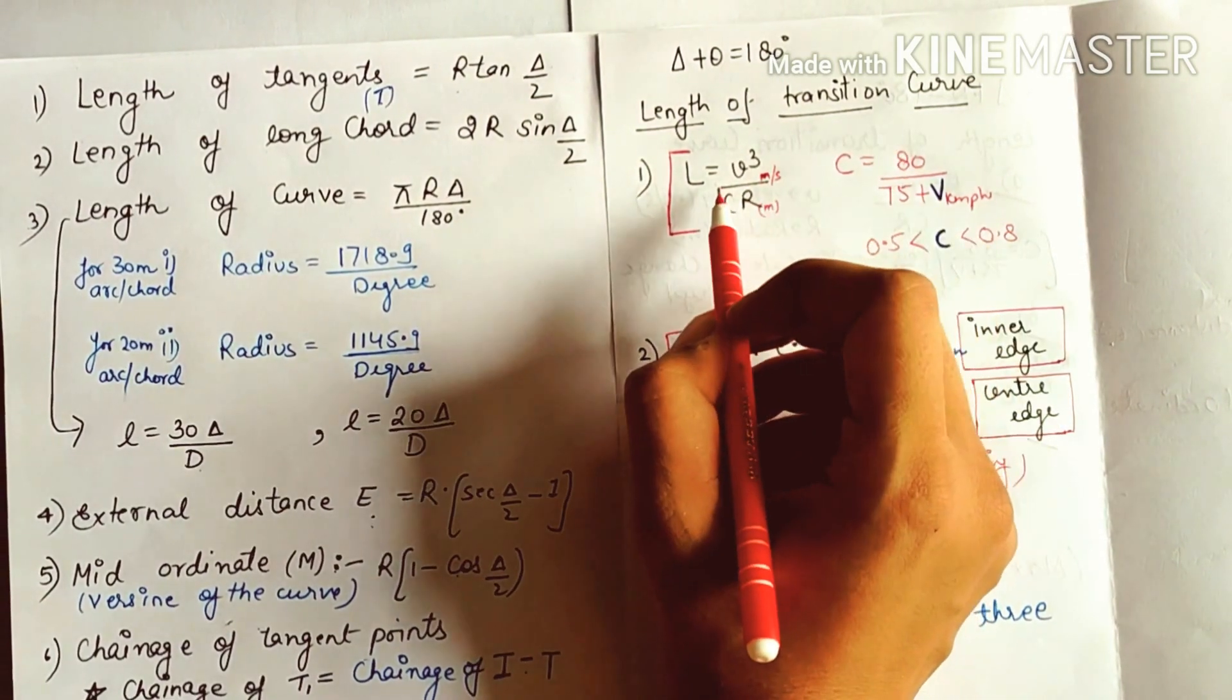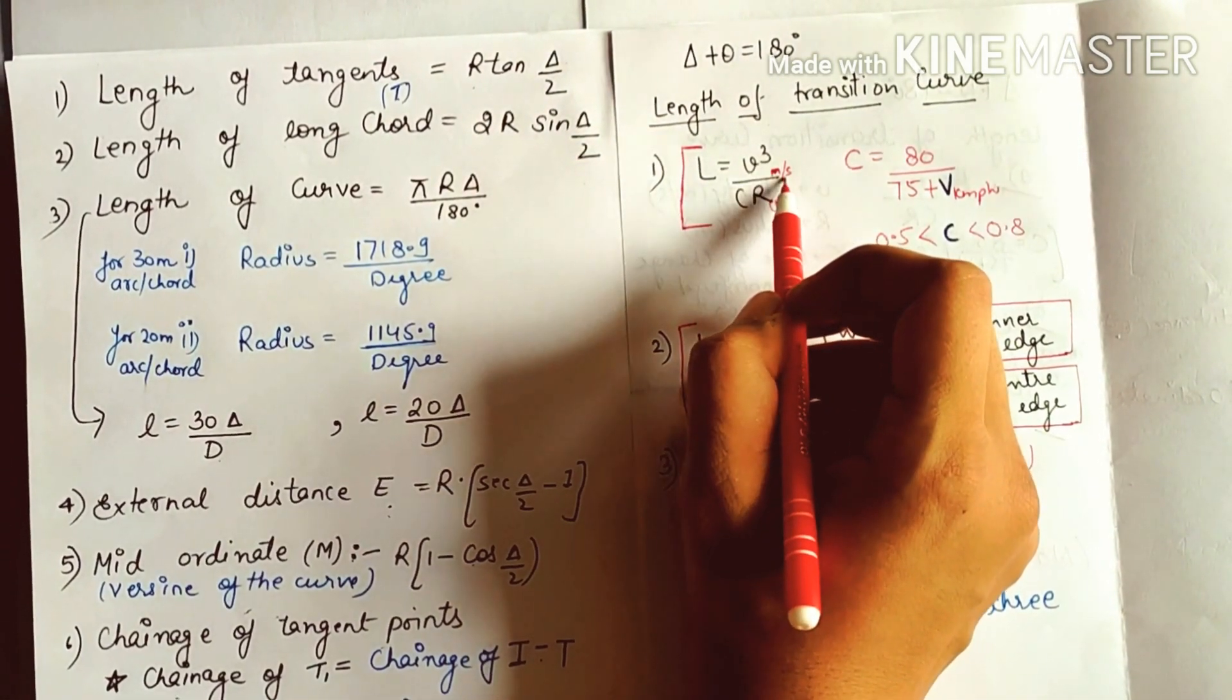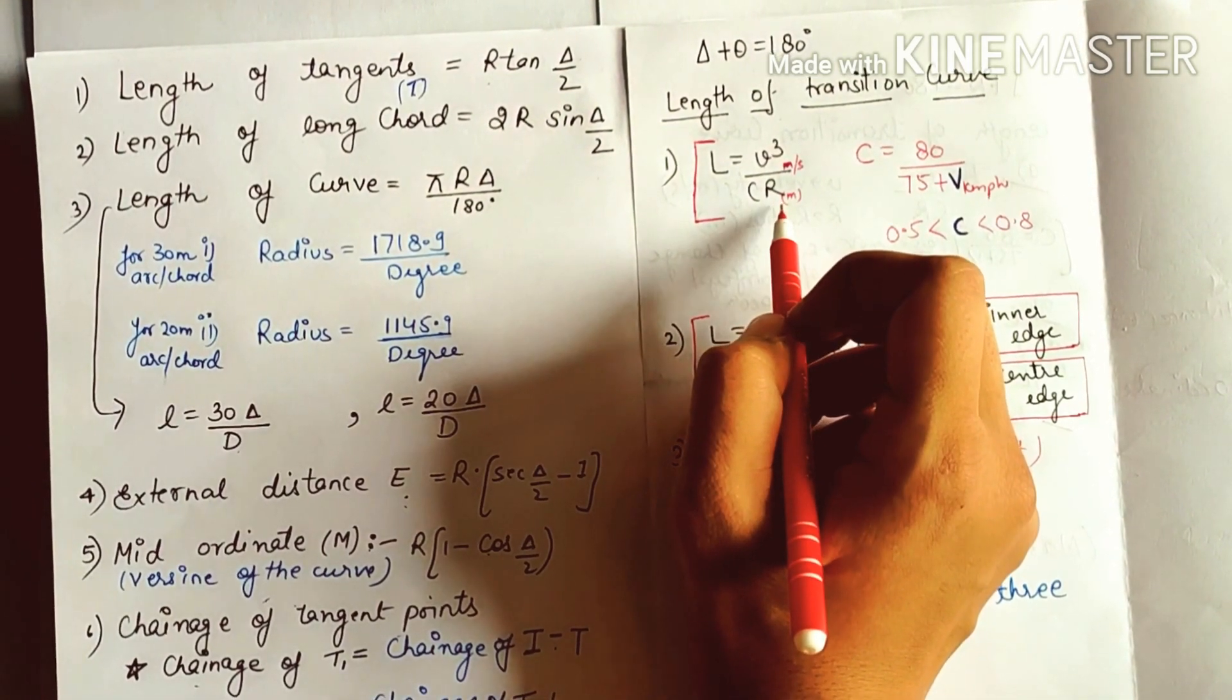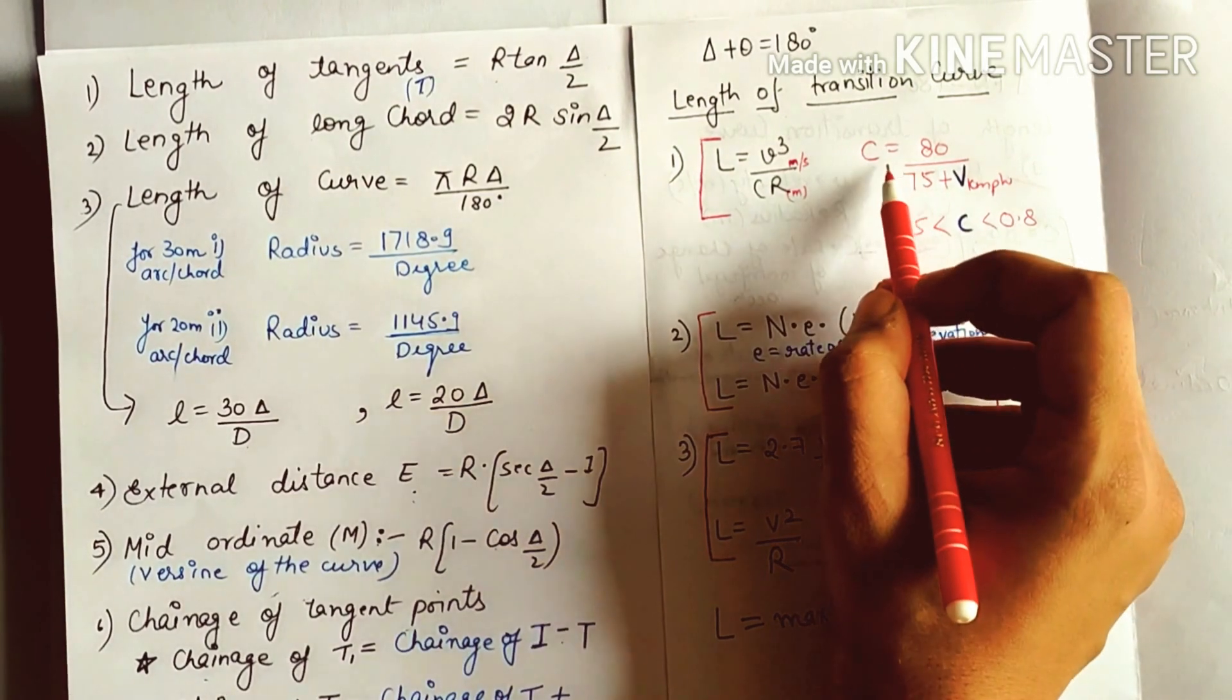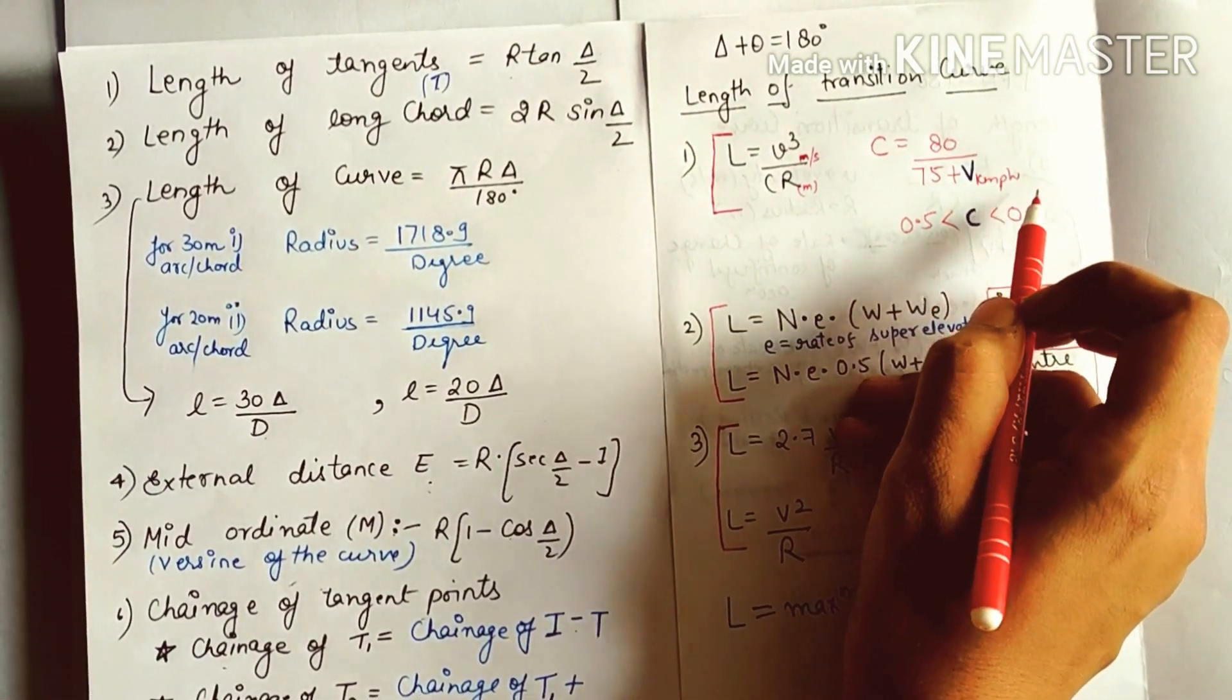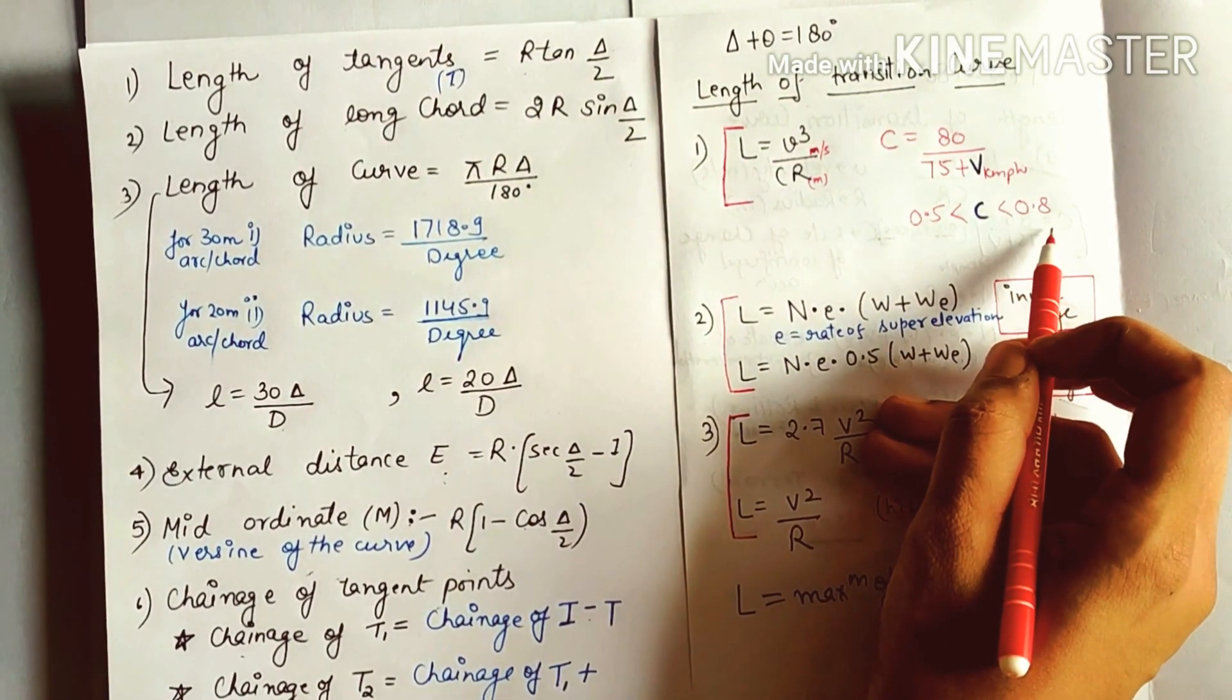Length of transition curve: first formula is L = V³/(CR), where V is in meters per second, C is the rate of change of centrifugal acceleration, R is the radius in meters. The relation for C is 80/(75 + V), where V is in kilometers per hour. The range of C is 0.5 to 0.8.